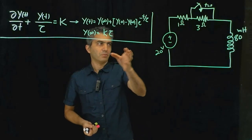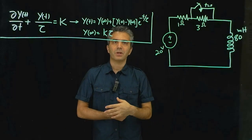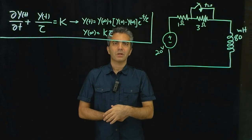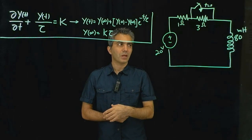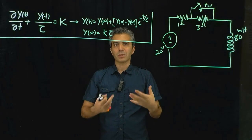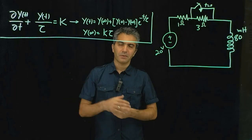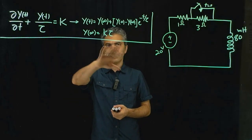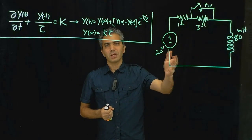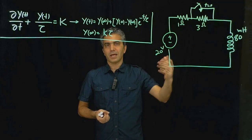With inductors and capacitors included in the circuit, the math part of the algorithm is going to include the solution for a differential equation. If you're dealing with only one inductor, one capacitor, or a combination that can be reduced to an equivalent single element, you'll be dealing with a first-order differential equation. This is the solution for a simplified first-order differential equation. Today we're going to practice analyzing a circuit with an inductor using that algorithm.